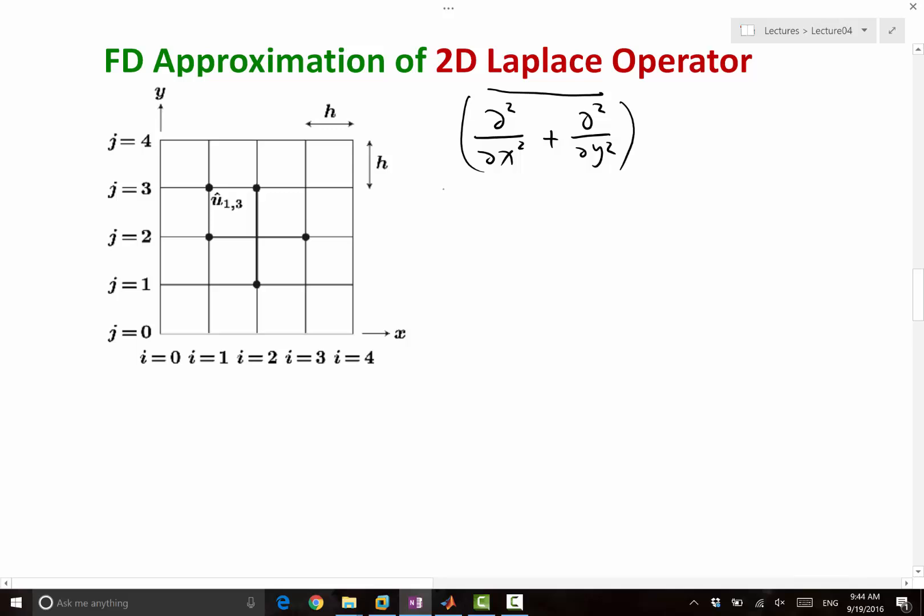And remember, in the 1D case, the second derivative of u can be approximated by u of i plus 1 plus u of i minus 1 minus 2 ui divided by delta x square. And we used Taylor series analysis to either derive this or analyze its order of accuracy.